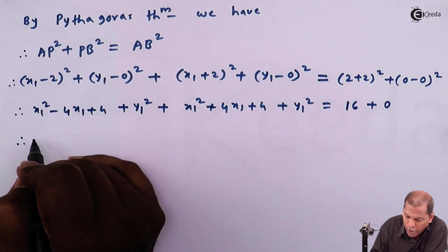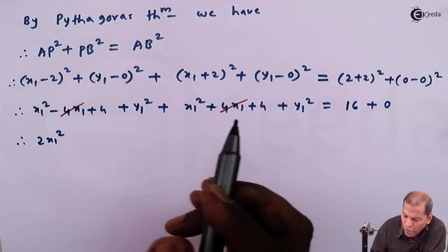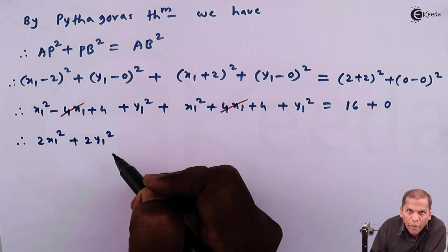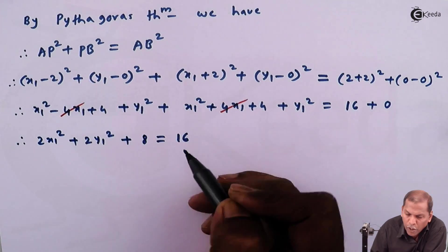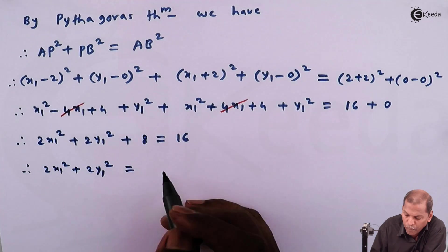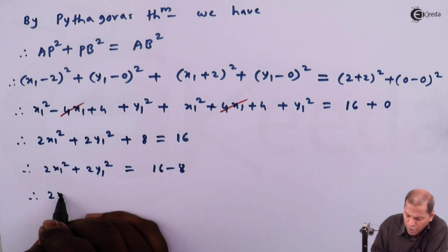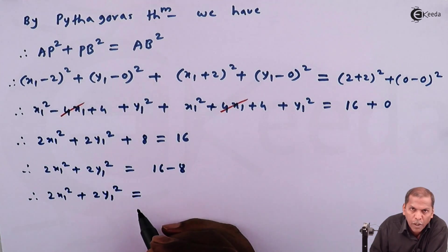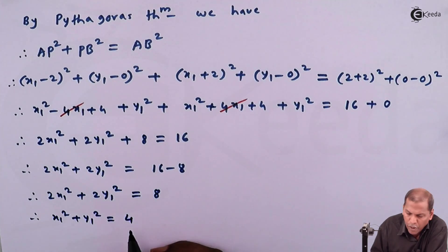Now x1² + x1² gives us 2x1², then -4x1 and +4x1 cancel. Then y1² + y1² gives us 2y1², and the constants +4 + 4 give us +8, which equals 16. Therefore 2x1² + 2y1² = 16 - 8 = 8. Dividing each term by 2, we get x1² + y1² = 4.